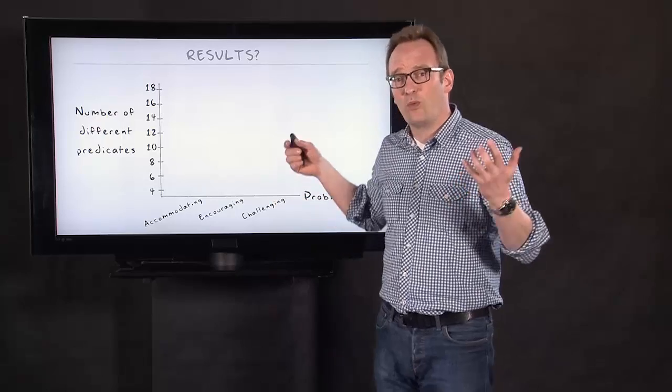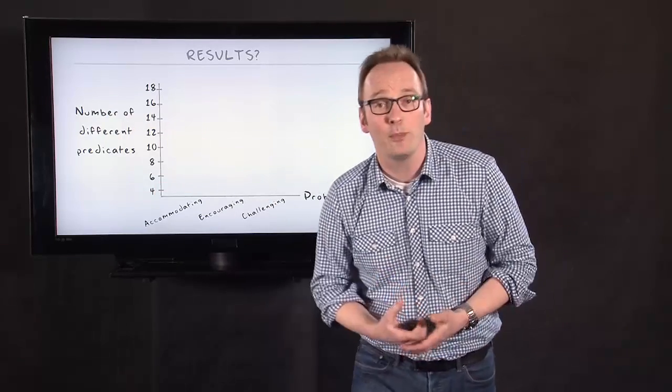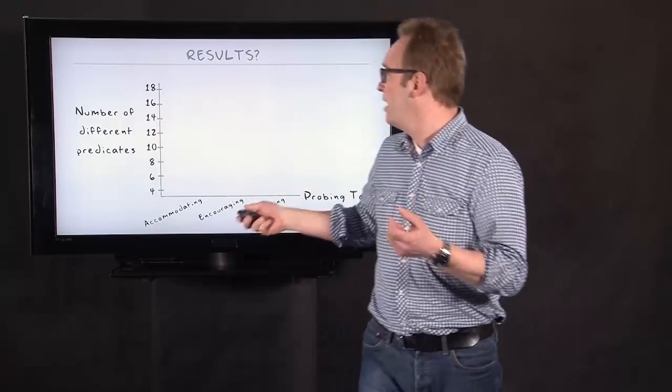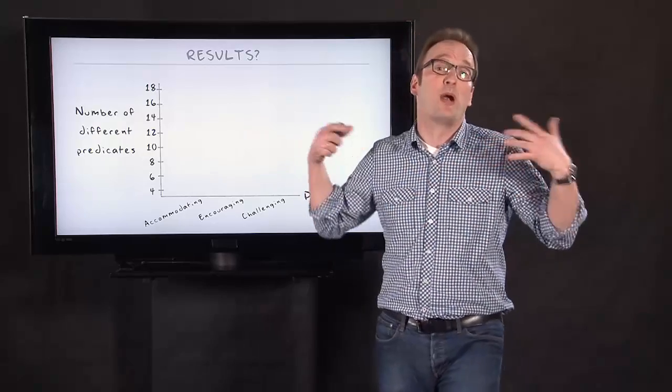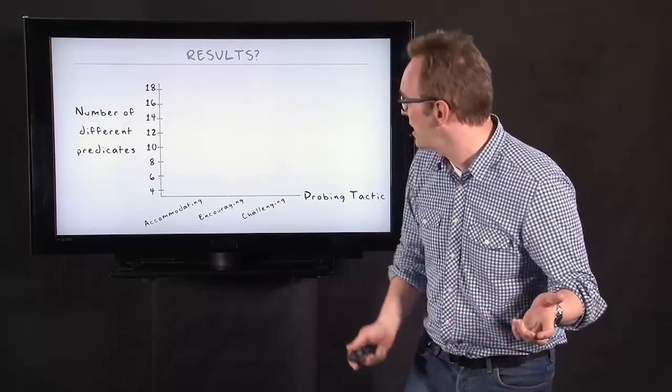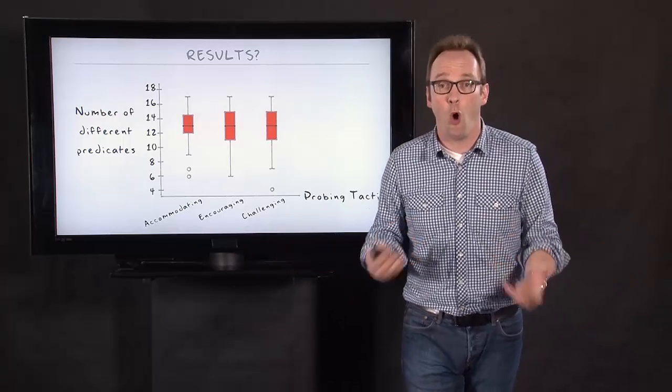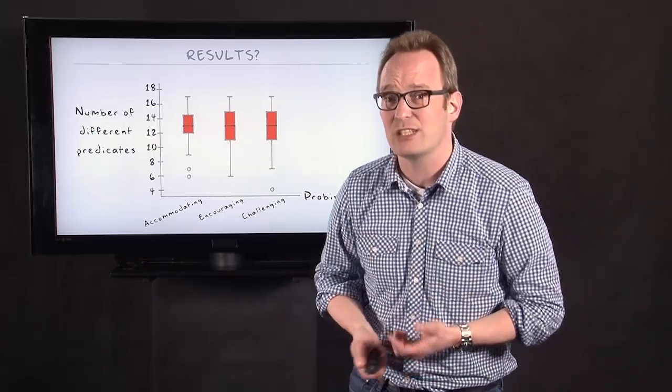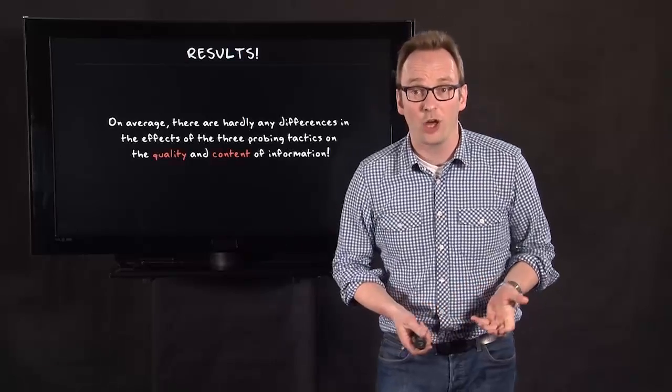So what are the effects? This is just one of the many variables I used in order to check for the amount of information. And in this case, for the broadness of the information, the number of different predicates used with categories. And as you can see, it did not matter at all. And this was not just for this variable, for this indicator of quality. It was for all indicators of quality and all indicators of content.